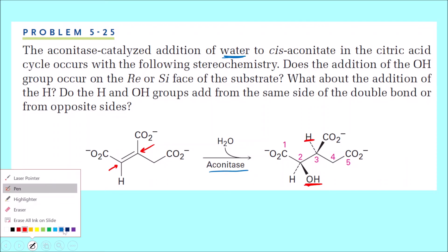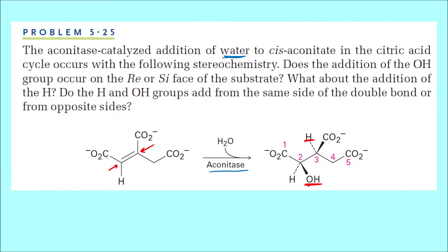For carbon 2: the three groups are carbon, hydrogen, and carbon. Looking at adjacent atoms — one carbon has oxygen, oxygen, oxygen attached; another has hydrogen, hydrogen, and carbon; the third has hydrogen, carbon, carbon. Oxygen has highest atomic number, so the carbon bearing three oxygens gets first priority. Then hydrogen, hydrogen, carbon gives second priority; and the remaining group gets third. From 1 to 2 to 3 it is clockwise, so from the top it is re face.